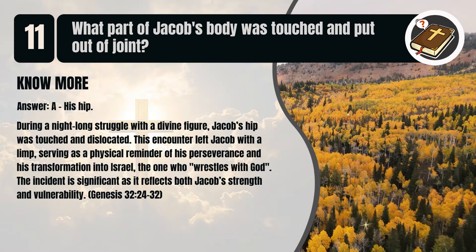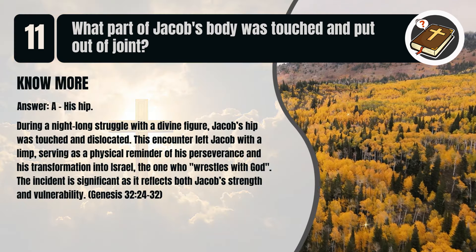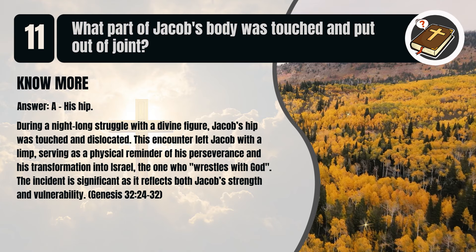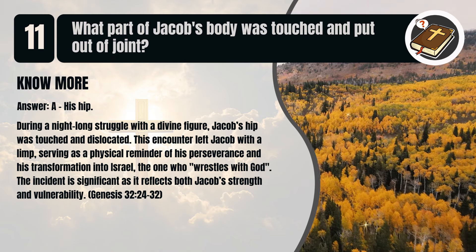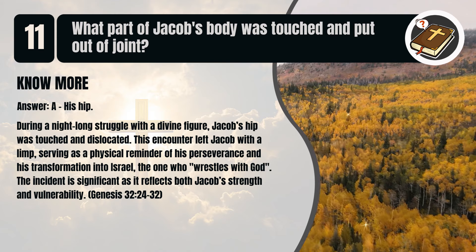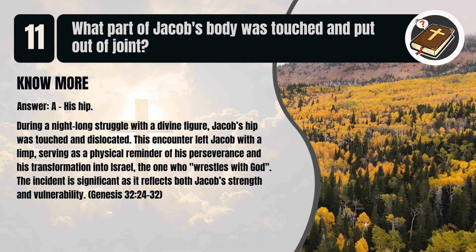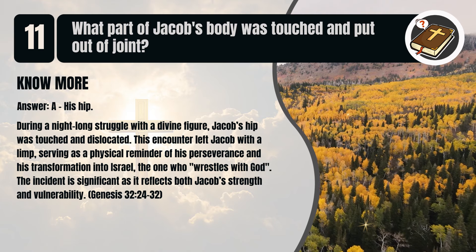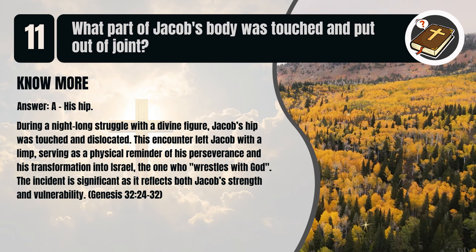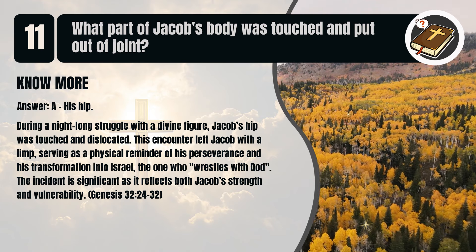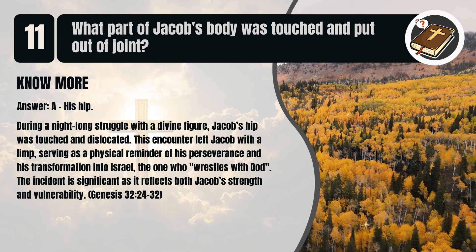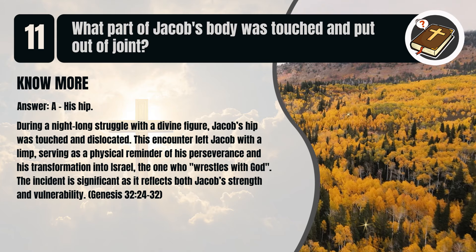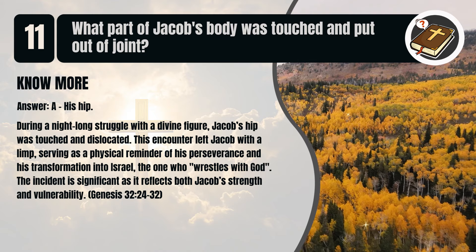That's A. His hip. During a night-long struggle with a divine figure, Jacob's hip was touched and dislocated. This encounter left Jacob with a limp, serving as a physical reminder of his perseverance and his transformation into Israel, the one who wrestles with God. The incident reflects both Jacob's strength and vulnerability. Genesis chapter 32 verses 24 to 32.